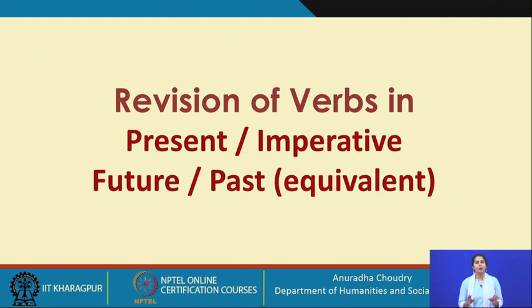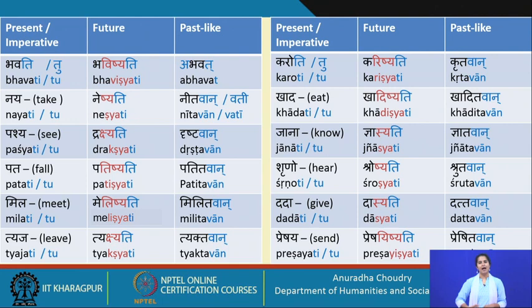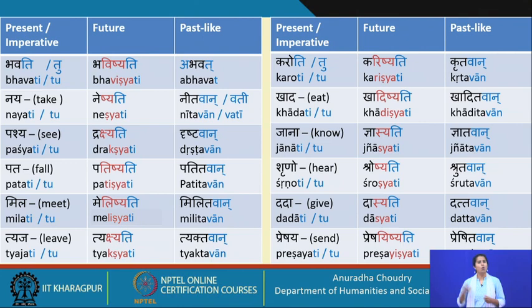Let's do a quick revision of verbs used with the accusative case. First, bhavati meaning 'to be' or bhavatu: future bhavishyati, past abhavat. Bhavati generally takes the first case — karyam bhavati, karyakramaha bhavishyati meaning 'there will be a program', bhojanam abhavat meaning 'the food is finished.' It takes the subject case.